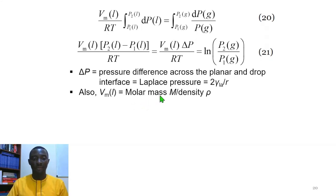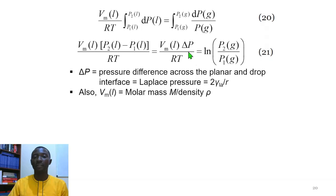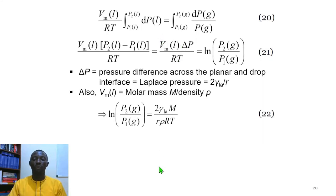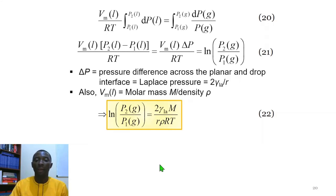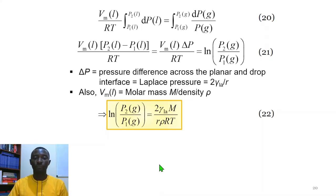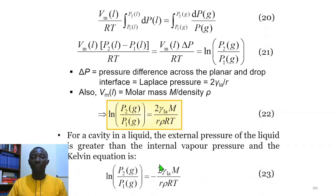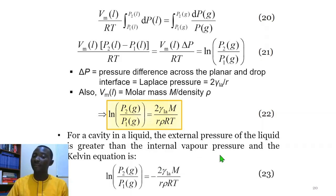Substituting these expressions yields equation 22, the Kelvin equation for a liquid drop. For the case of a cavity in a liquid, the external pressure of the liquid is greater than the internal vapor pressure, and the Kelvin equation is given by equation 23.